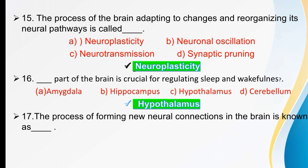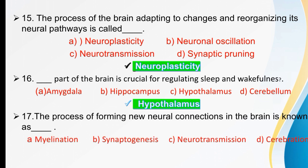The process of forming new neural connections in the brain is known as dash. Options are myelination, synaptogenesis, neurotransmission, or cerebration. The right option is synaptogenesis — the process of forming new neural connections in the brain.